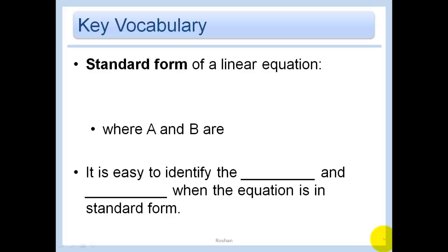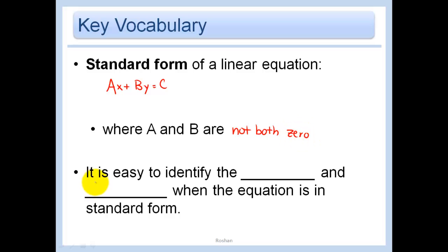What is standard form of a linear equation? That would be in the form Ax + By = C, where A and B are not both zero. It is easy to identify the x-intercept and y-intercept when the equation is in standard form. If y is zero, you have Ax = C and it's easy to solve for x. If x is zero, you have By = C and it's easy to solve for y.